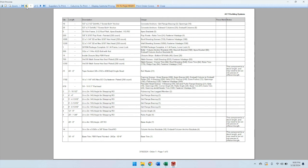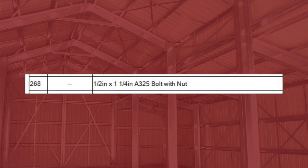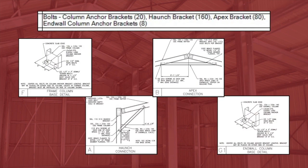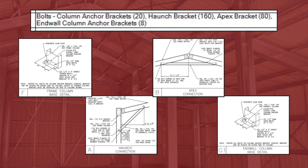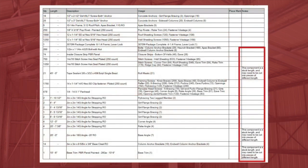Let's look at the A325 bolts, for example. We know there are 268 bolts and nuts, but where do those pieces go? The Usage column tells us we will use 20 in the column anchor brackets, 160 in the haunch brackets, 80 in the apex brackets, and 8 in the end wall column anchor brackets. The Notes column contains additional information your erector will find vital. On most jobs, you will have panels, framing members, and trim that need to be cut on site. The Notes column calls out these components and may include quantities and lengths required.